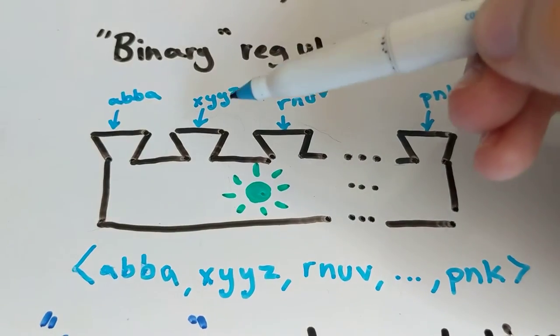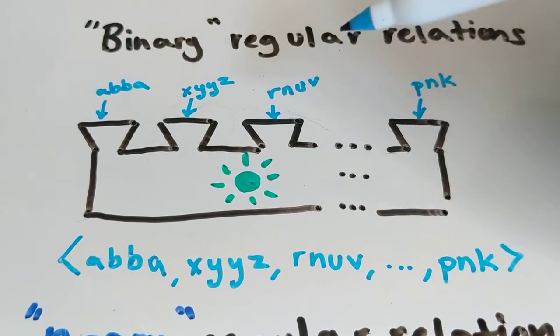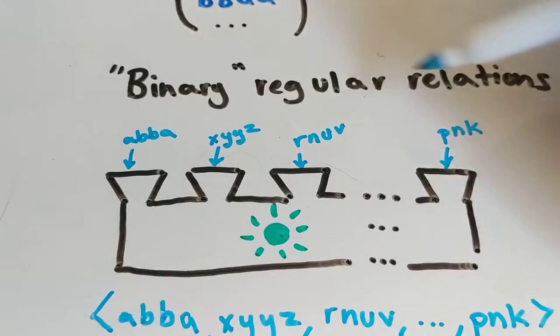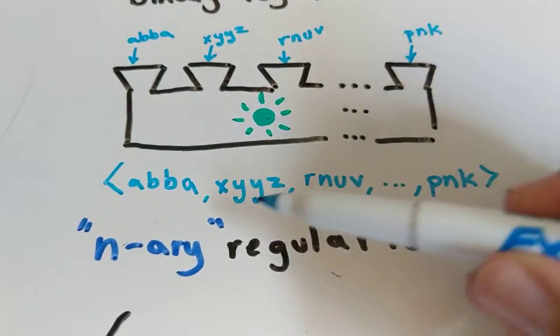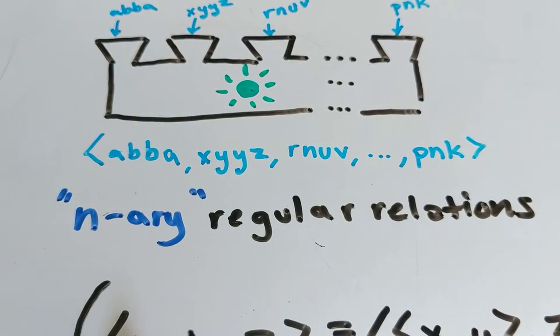This is like what a machine like that would look like. You put ABBA in this slot, XYYZ in this slot, R and UV in another one and PNK in another one and it'll tell you is that a member of your set. We call these n-ary regular relations.